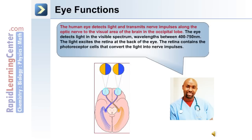The physical functions of the eye: the human eye detects light and transmits nerve impulses along the optic nerve to the visual area of the brain. The eye detects light within the visible spectrum, between wavelengths of 400 nanometers to 750 nanometers. This light excites the retina at the back of the eye, and the retina contains photoreceptor cells that convert the light into nerve impulses.